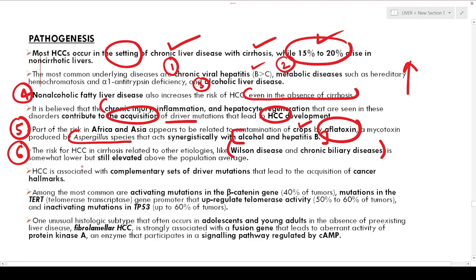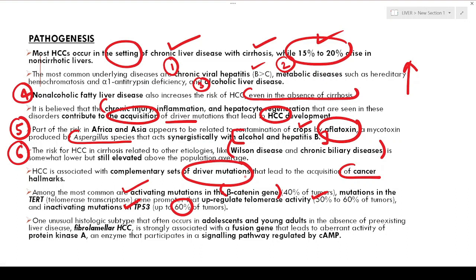HCC is associated with a set of driver mutations. Among the most common are activating mutations in the beta-catenin gene in 40 percent of tumors. Mutations in the TERT gene that upregulate telomerase activity are seen in 50 to 60 percent of tumors. Inactivating mutations of TP53 are seen in another 60 percent of tumors. So the most important driver mutations are beta-catenin activating mutations, TERT gene mutations, and TP53 inactivating mutations.